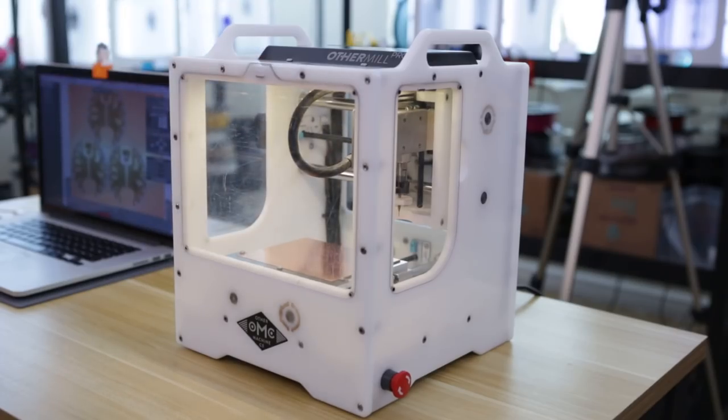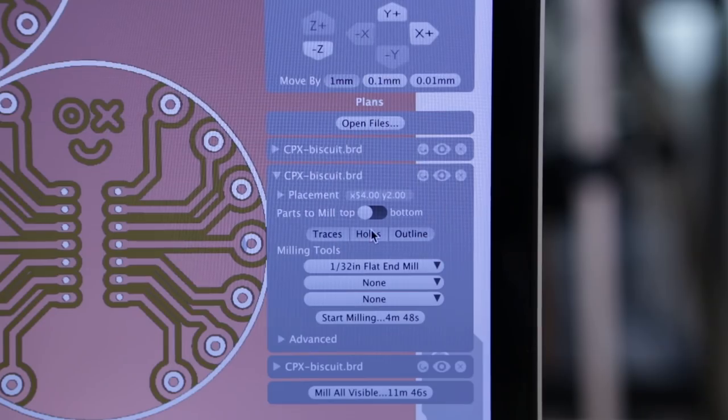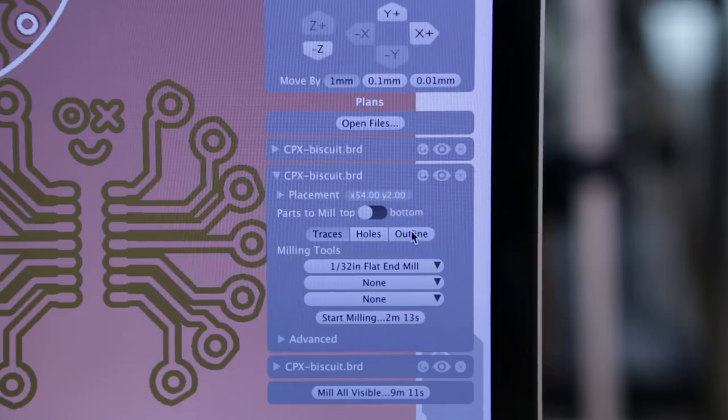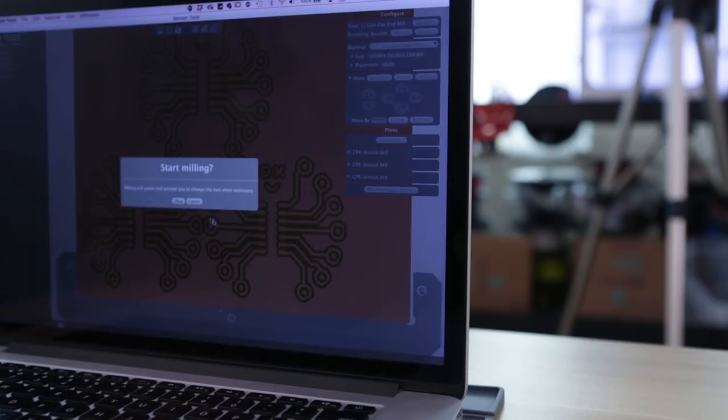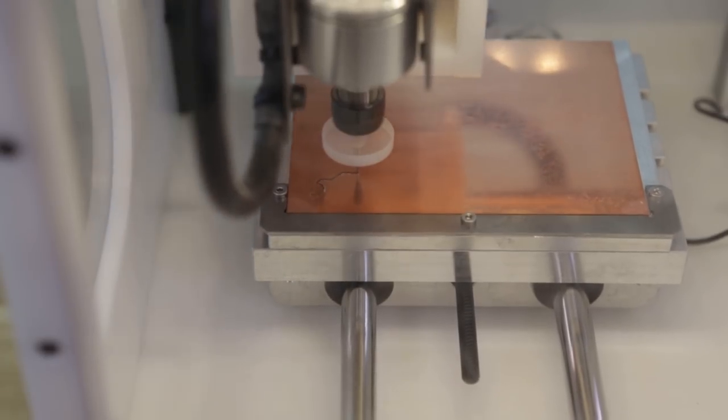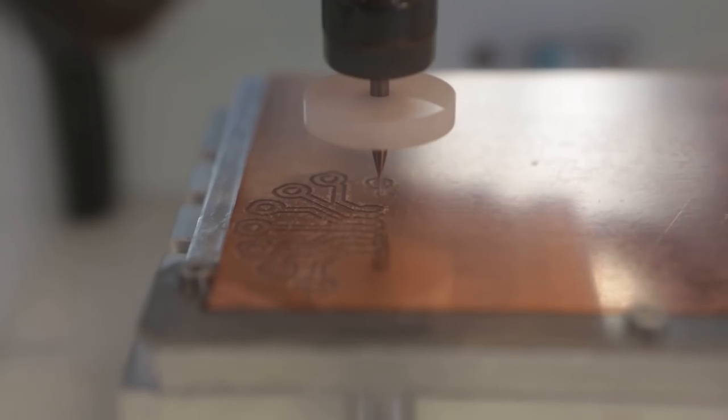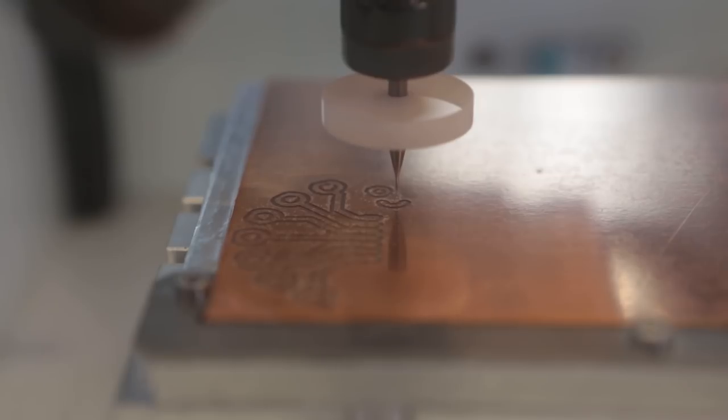For the top layer we can set to only cut the traces so we'll save the holes and outline for the bottom layer. And once we're all set up we're ready to make some traces. The software configures the feed and speeds automatically. The cutting depth is set to default but it can also be customized.